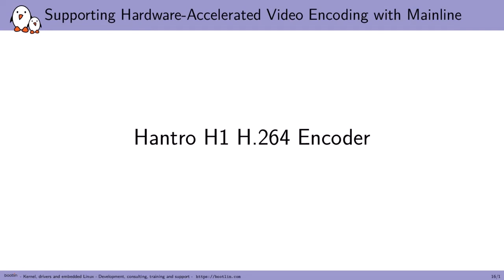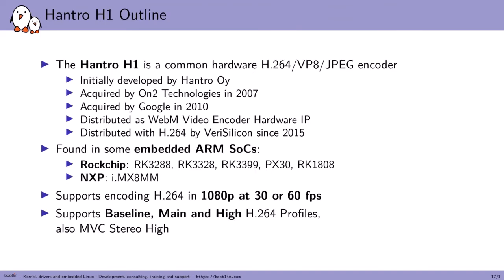Now let's look at the Hantro H1 H.264 encoder hardware more closely. The Hantro H1 is a common hardware H.264 encoder that can also do VP8 and JPEG. It is found in a few embedded ARM SoCs — many Rockchip chips use the Hantro H1 extensively. It's also found on some NXP SoCs, the i.MX8MM. Depending on the version, it can do 1080p at 30 or 60 frames per second, with lots of H.264 profiles including high and main, and it can also do MVC stereo to encode 3D.